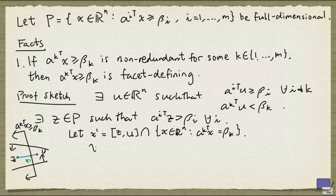Now, x' is in P because it satisfies all the inequalities. Also, x' satisfies these inequalities. That's because Z satisfies all of these strictly, and U satisfies all of these.